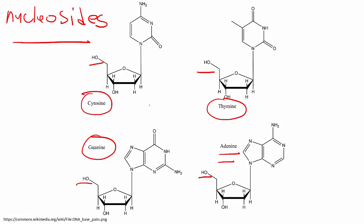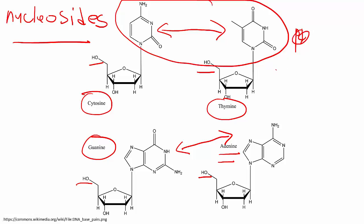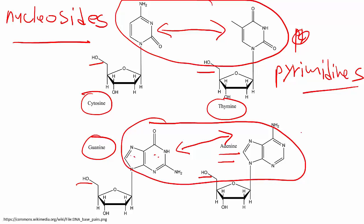Also though, take note that cytosine and thymine has this single ring structure, right? Single ring structure, while guanine and adenine has this double ring structure. Now what does this mean? Well, this means more terms, right? Just like everything else in science. So pyrimidines, as a whole, these guys can be referred to as pyrimidines. And these guys down here, because of this double ring structure that we see, can be called purines.